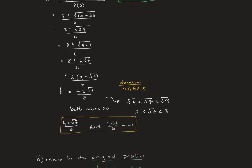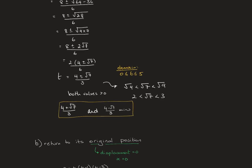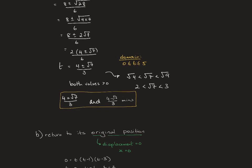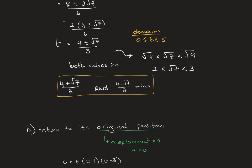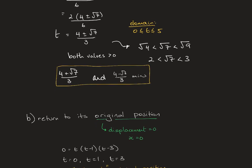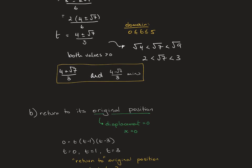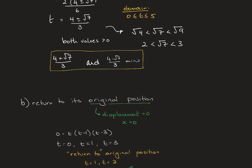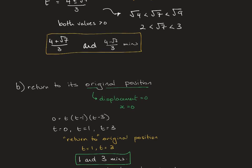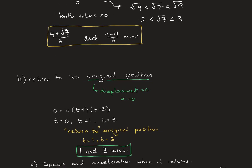The second part asks when the bird returns to its original position. Its original position means displacement is zero, so X = 0. Solving the equation gives three values. Checking against the domain (T between 0 and 5 inclusive) is important, but also the question asks when it *returns* to its original position, so T = 0 is excluded. The final answer is T = 1 and T = 3 minutes.